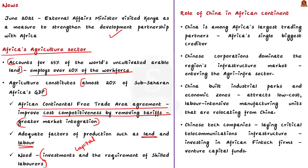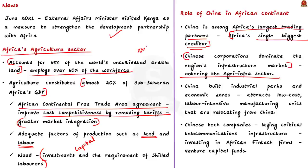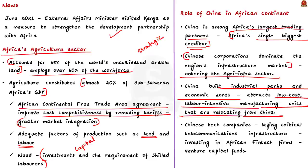And here is where China is taking advantage. Although India's Africa strategy exists independently, it is important to be aware of China's increasing presence in the region. China is among Africa's largest trading partners and its single biggest creditor. Chinese corporations dominate the region's infrastructure market and are now entering the agri-infra sector. China's engagement in African agriculture is taking on a strategic quality. Alongside this, China has also built industrial parks and economic zones in Africa which attract low-cost labour-intensive manufacturing units relocating from China. Chinese tech companies are laying critical telecommunications infrastructure and investing in African fintech firms through venture capital funds.